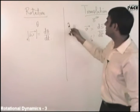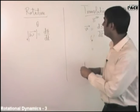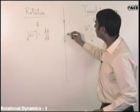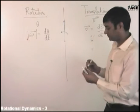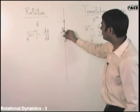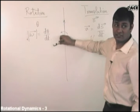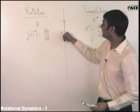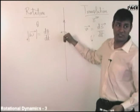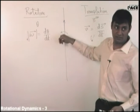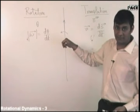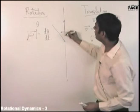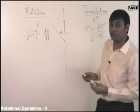Suppose this is the pen with a point here, and I start rotating it like this. The pen rotates like this. If I have my curl in this direction, my thumb is pointing towards you. So I say that this angular displacement — instead of calling it clockwise or anticlockwise — is in this direction.